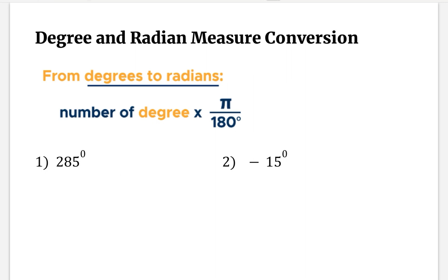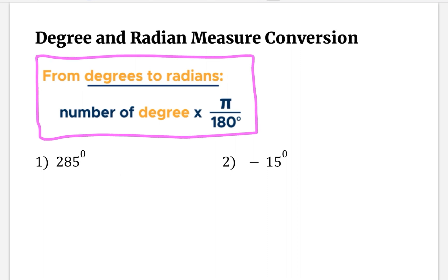The first thing we are going to do is convert from degrees to radians, and we will be using this formula: number of degrees times pi over 180 degrees. Let us apply that in problem number one. So 285 degrees — I am going to write this as a fraction over one and multiply with the formula pi over 180 degrees.